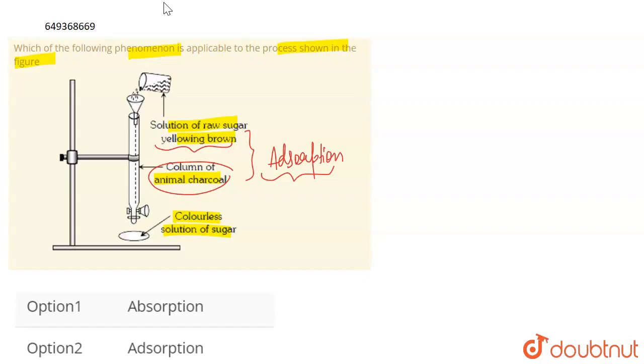We filter raw sugar using animal charcoal. This raw sugar is absorbed by animal charcoal.